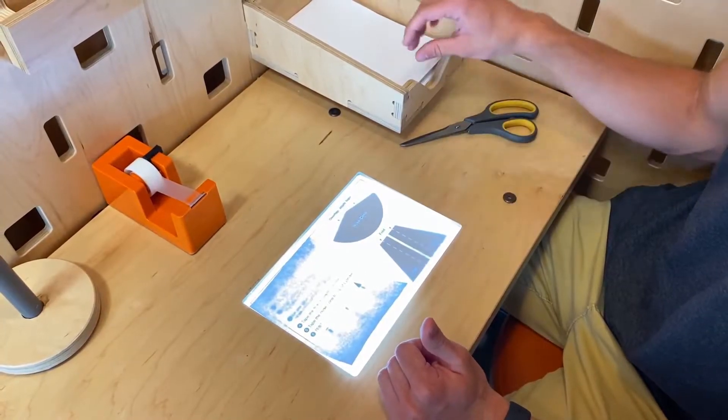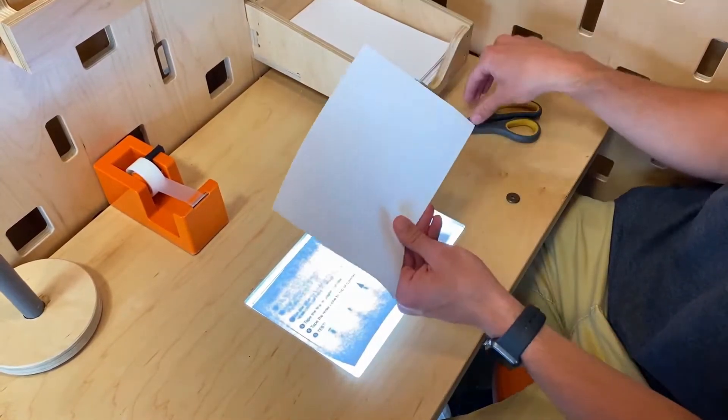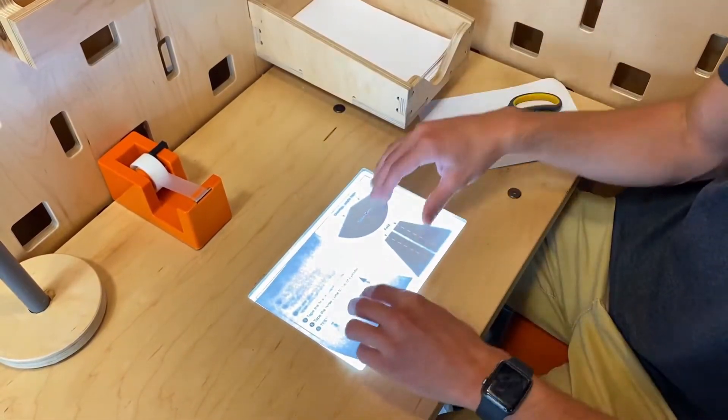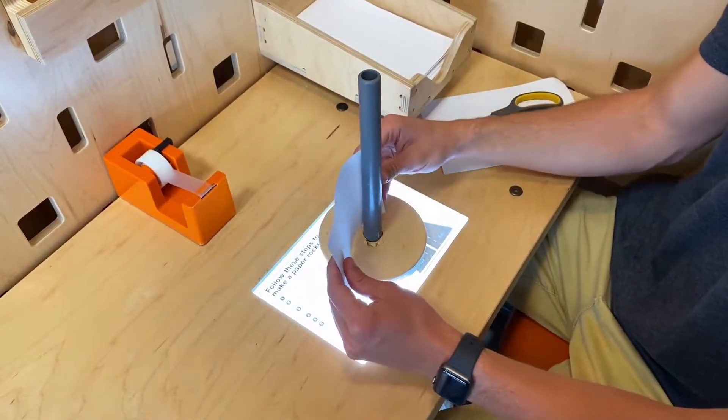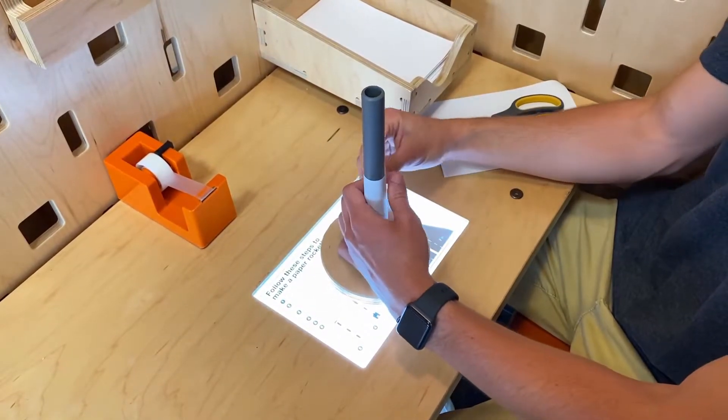The first step in making a rocket is grabbing a piece of paper and cutting it in half horizontally. Once you have your piece of paper, grab the rocket measuring tube and wrap your piece of paper around the tube firmly.